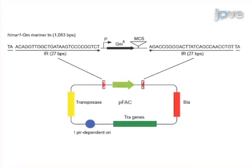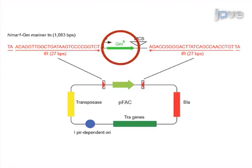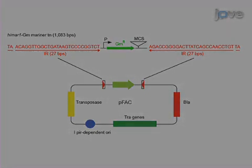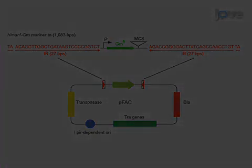The mini-Himar1 Mariner transposon vector PFAC contains two 27 base pair inverted repeats with TA insertion sites flanking the AAC-C1 gentamicin resistance cassette, with its Sigma-70 dependent promoter.